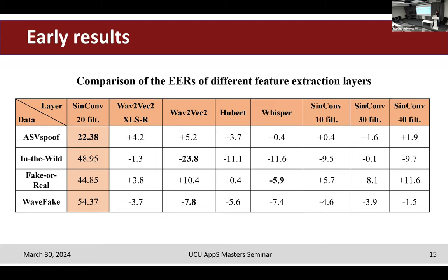Within the FakeOrReal dataset, only RawNet2 paired with Whisper outperforms the original architecture. Whisper possesses the most robust generalization capabilities, consistently outperforming the original model across all datasets except ASVspoof where it lags by less than 1%. Within the in-the-wild and WaveFake datasets, Wav2Vec2 shows the best generalization capabilities.